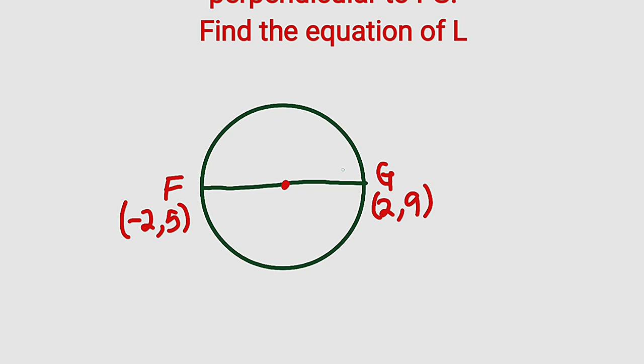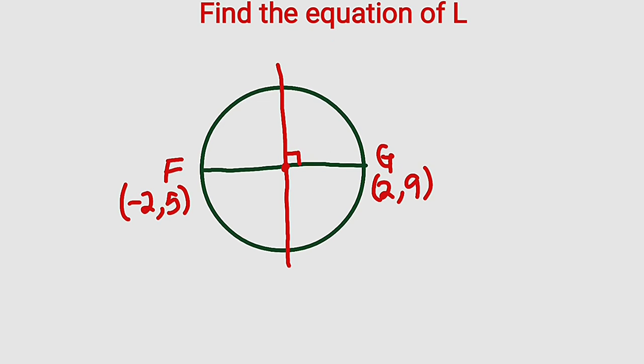What you should remember is that any line that is perpendicular to the line FG must intersect it at right angle. So now let's assume we have a line that passes through the center. It must intersect this line at right angle, forming 90 degrees. So what do you know about two perpendicular lines? Their respective slopes or gradients are just the negative reciprocal of each other. So now let's just find the slope or gradient of the line FG.